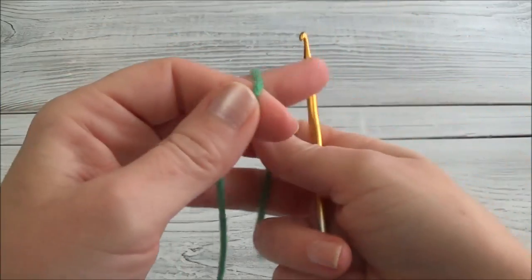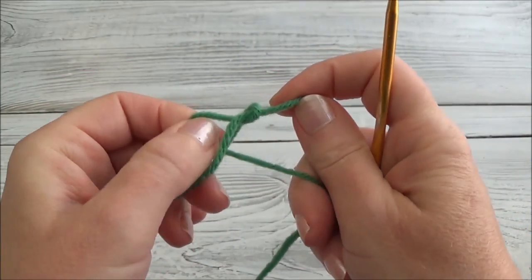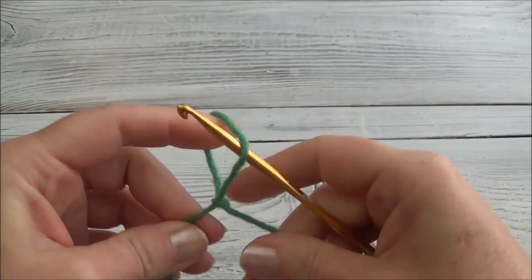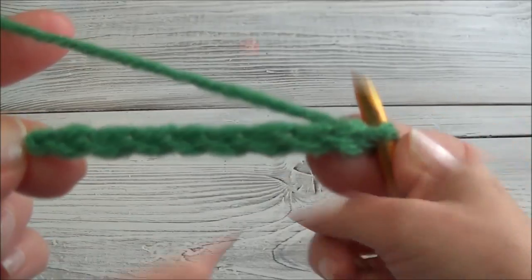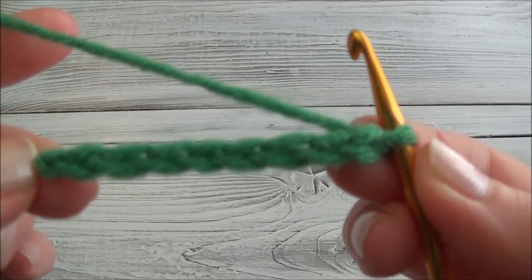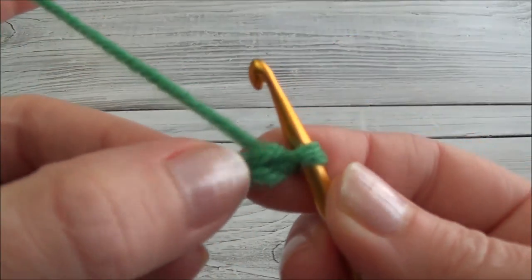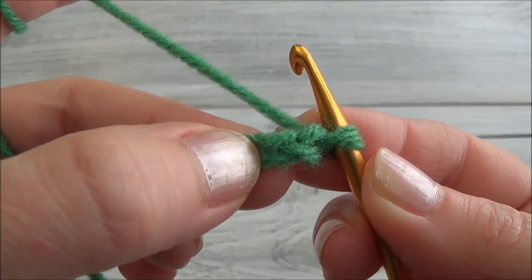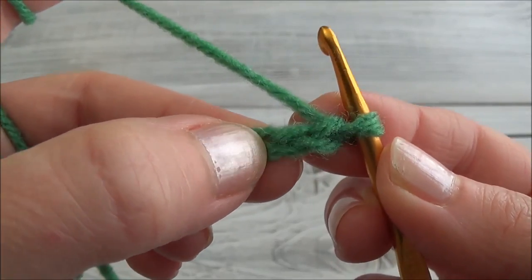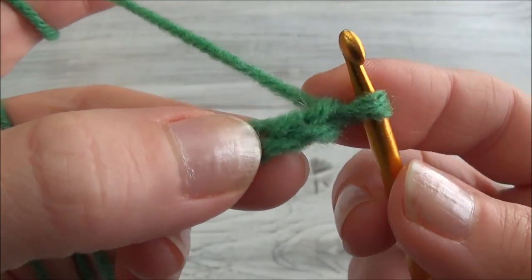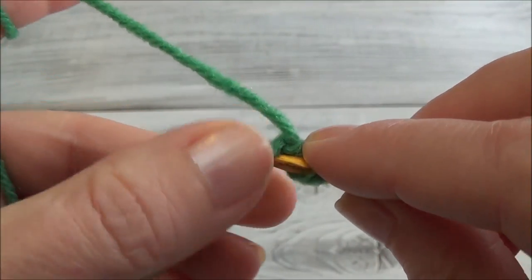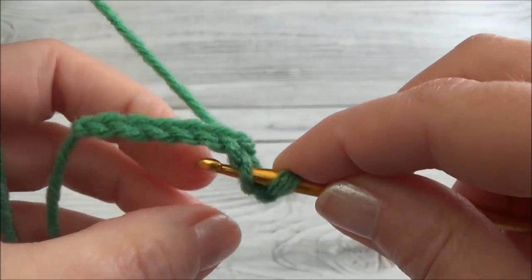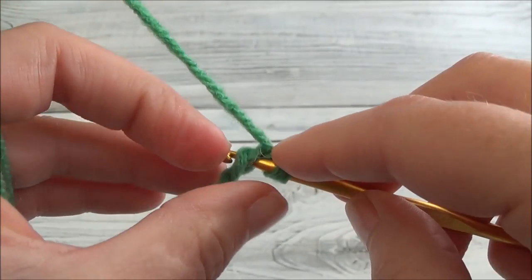Row one, we're going to chain eight. So make your slip knot and yarn over and pull through eight times. There's our chain of eight. Starting in the second chain from the hook, there's the first chain. Starting in the second one, we're going to put a single crochet in the next four chains.